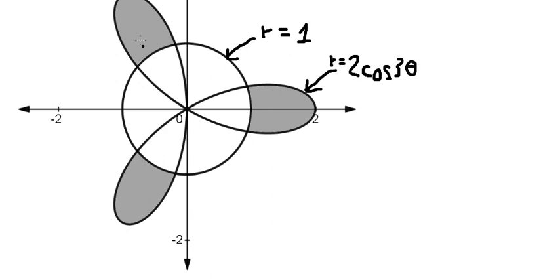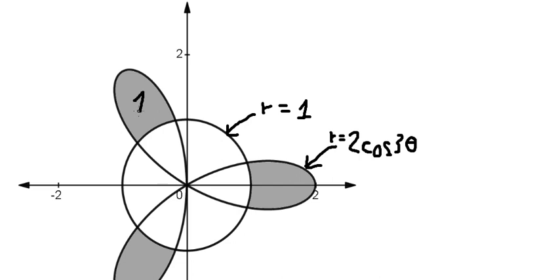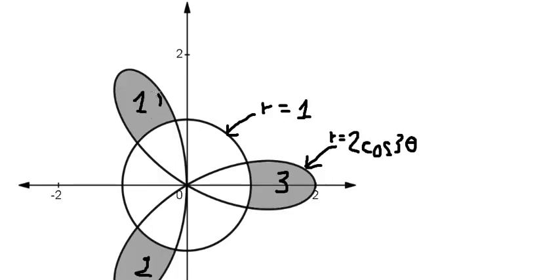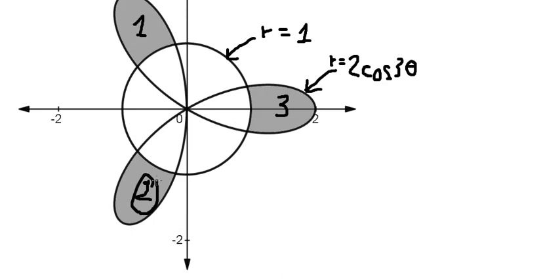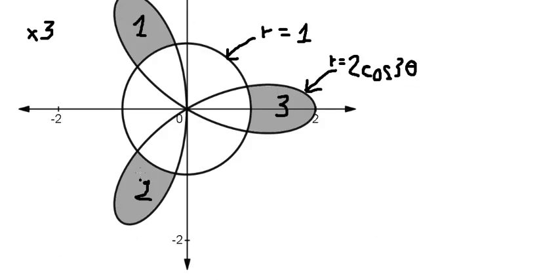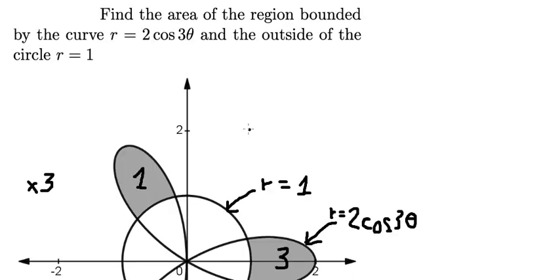We can see that we have regions one, two, and three. The areas of regions one and two are the same as region three, so we just need to find one area, then multiply by three to get the total area. Next, we need to find the intersection.